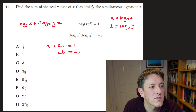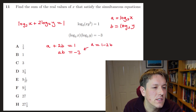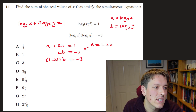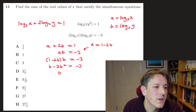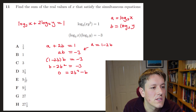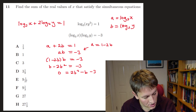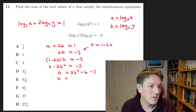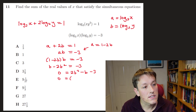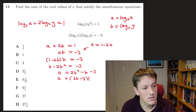From the first equation I can write a = 1 − 2b and substitute into the second to get (1 − 2b)·b = −3, or b − 2b² = −3. So I've got 0 = 2b² − b − 3.